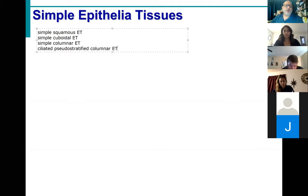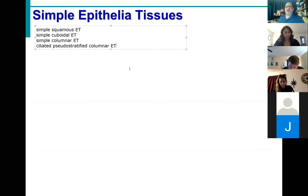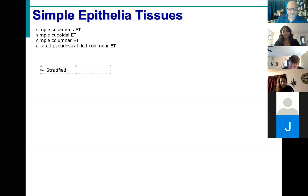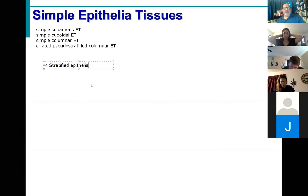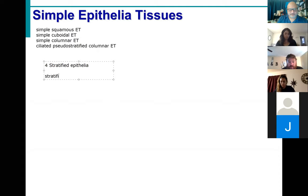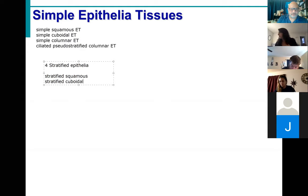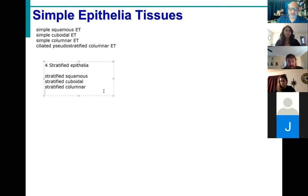Those were the four simple epithelial tissues. And then of course we know there are how many stratified? Four. So there are four stratified epithelia. What are the names of the ones we can piece together? Stratified squamous. Excellent. What else? Stratified cuboidal. What else? Stratified columnar. And of course, because anatomists hate us, there's going to be a curveball.